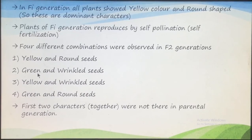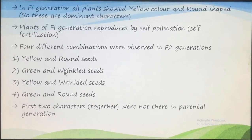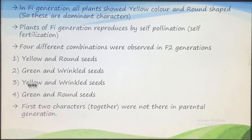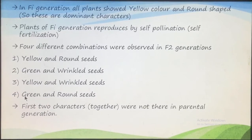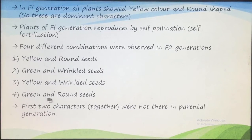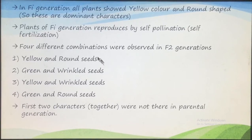He found some seeds were yellow colored but wrinkled — these two traits were also not present together in one parent. The third combination was seeds that were green color with wrinkled shape — these two characters were present together in one of the parents. The fourth combination was seeds that were green in color and round in shape — also found in the parental generation. So the first two combinations were newly formed characters not present in any parental generation.